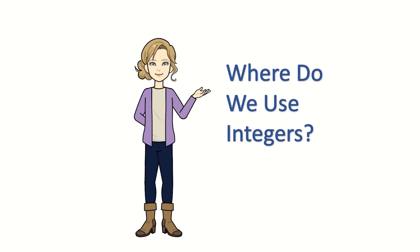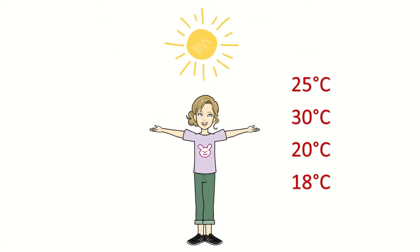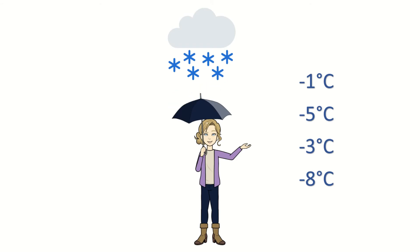Now that we know what an integer is and we know the basics of integers, where do we use it? Let's look at a few examples. First off, we have temperatures. When it is a nice and sunny day outside, it can be 25 degrees Celsius, 30 degrees Celsius, and so forth. When it is cold, snowing, and freezing outside, it can be negative 1 degrees Celsius or negative 5 degrees Celsius, and so on.